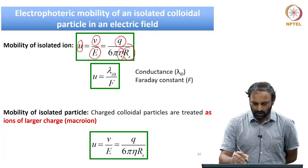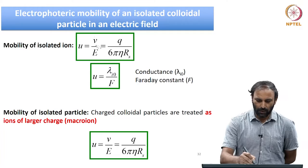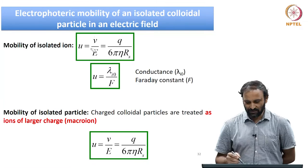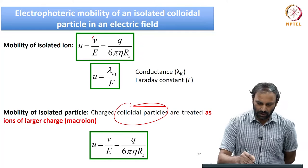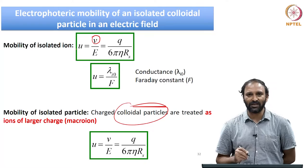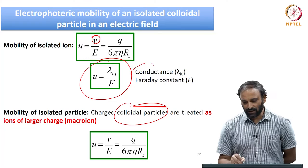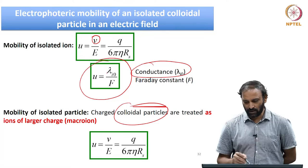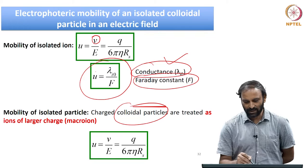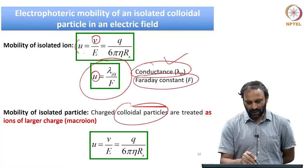If we want to estimate q — the charge of the isolated ion, which can be related to the zeta potential of a charged colloidal particle — we need to know the velocity. However, because ions are very small in dimension, their velocity cannot be measured directly. Instead, one can measure the conductance, which is the reciprocal of the resistance, and from the conductance and the Faraday constant, one can calculate U, and from that, calculate the charge of the isolated ion.